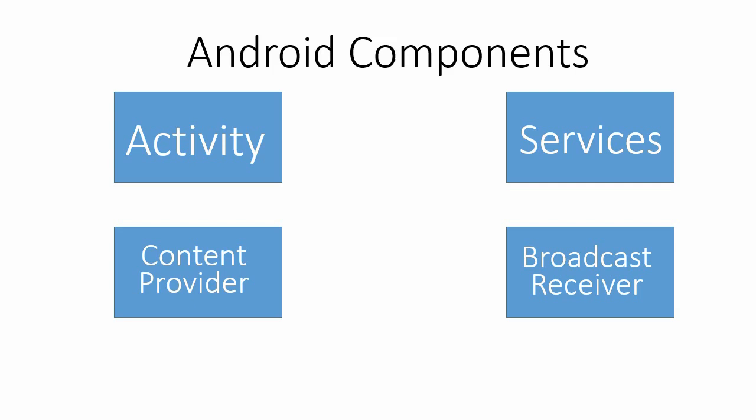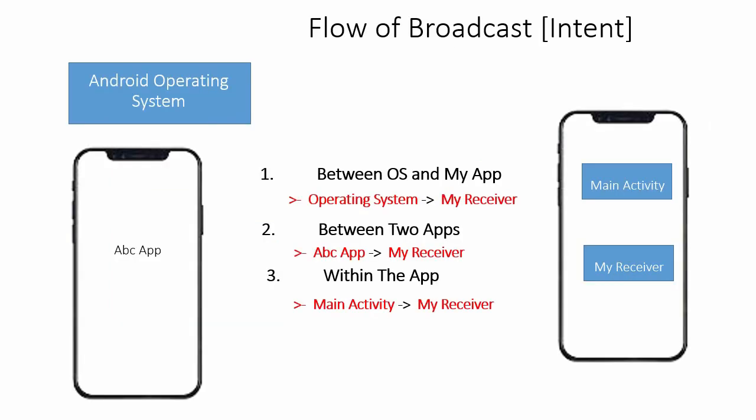What are broadcast receivers? Broadcast receivers are events which occur on Android. Let's look at the flow: the first type is between the operating system of Android and your app. For example, if I enable airplane mode, the OS sends a message to the app that airplane mode is enabled — that message is received by a broadcast receiver.